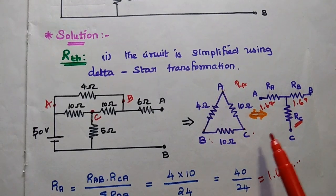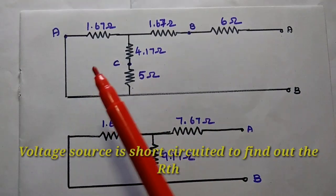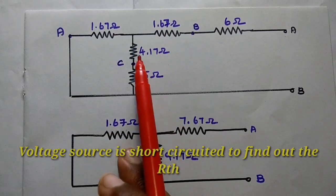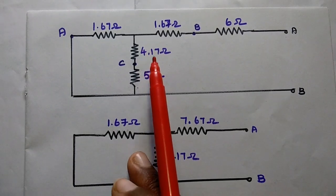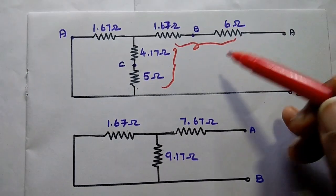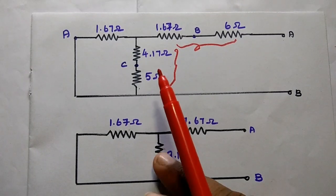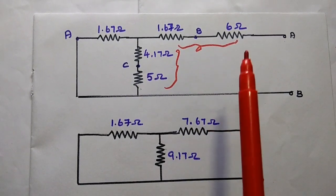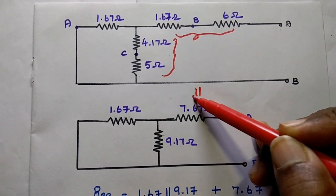The delta is replaced with the star connection in the next step, with RA, RB, and RC substituted in. The resistors that are in series are simply added together: 5 plus 4.17 gives 9.17 ohm on one branch, and 1.67 plus 6 gives 7.67 ohm on the other branch.